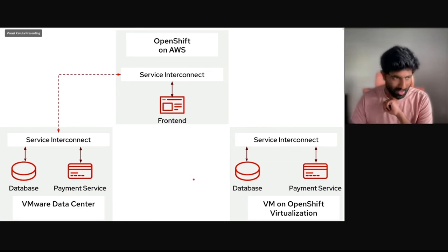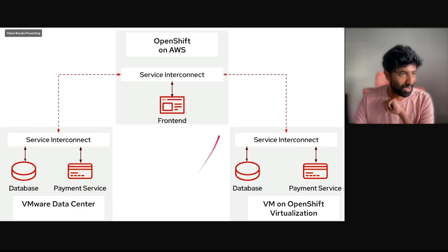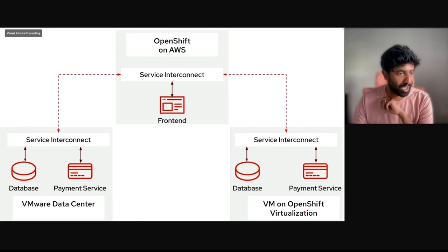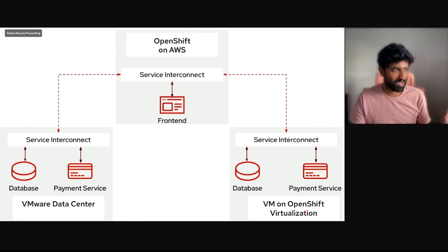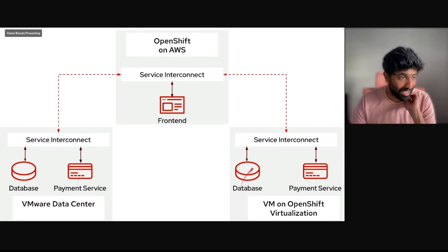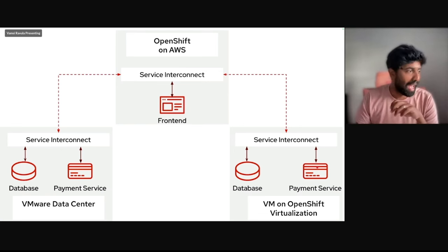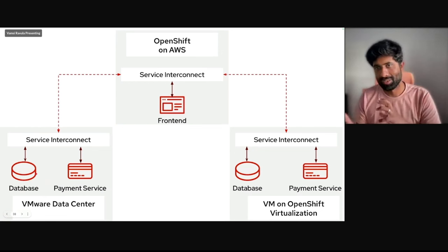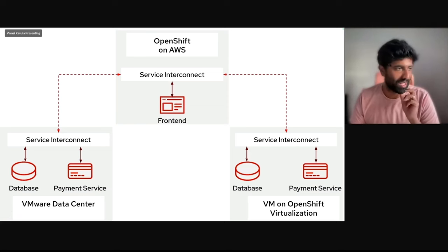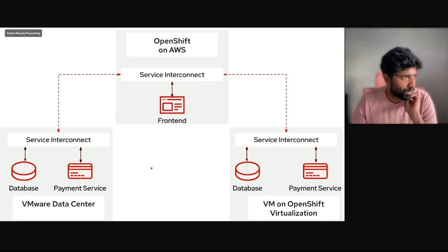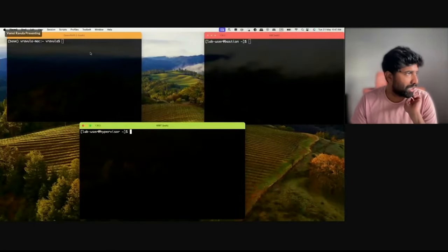What we'll do now is establish connectivity between our OpenShift and the new VM we created in OpenShift Virtualization, which is a replica of what we already have. We will give both the database and payment service the same service names as the ones in the VMware data center, so that the transition or switchover will be very seamless.